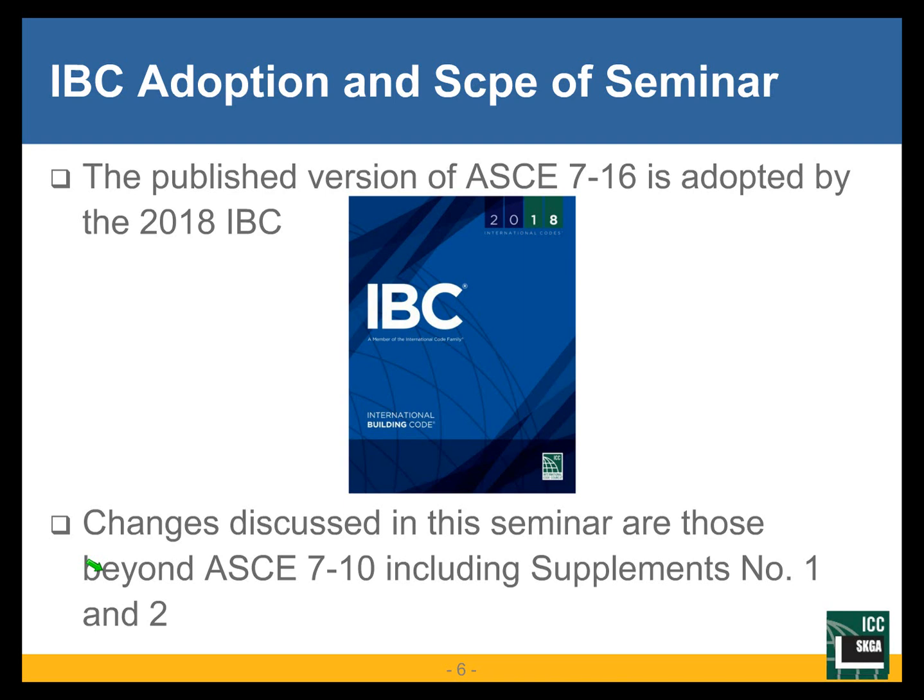What we will discuss in this seminar are changes beyond Supplements No. 1 and No. 2 to ASCE 7-10. Anything changed through those supplements will not be the subject of our discussion today — we will go beyond Supplement No. 2. Supplement No. 1 had about 2,000 technical items of changes. Supplement No. 2 had only a couple of changes to the non-building structures chapter — Chapter 15 of ASCE 7.